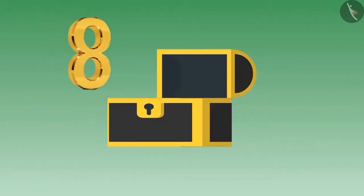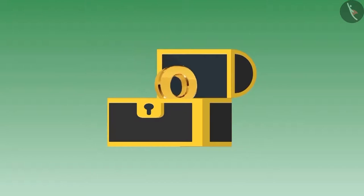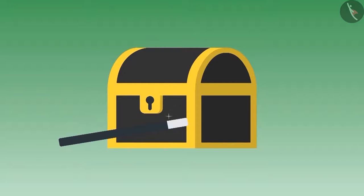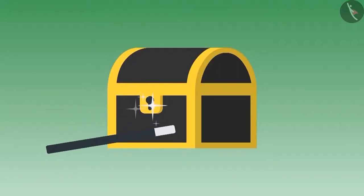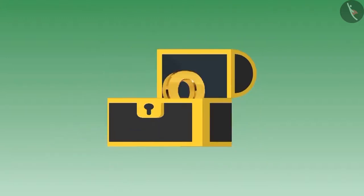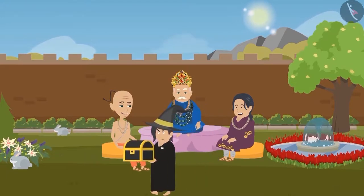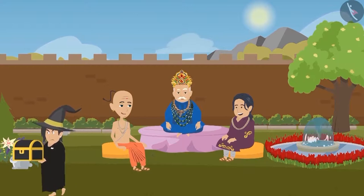Now, Tenali Raman placed the number 8 made of iron in the box upright. The magician recited the magical words and performed the magic. The moment the magician opened the box, he saw that the object was still upright. Once again, the magician recited the magical words but could not succeed. Finally, he gave up, apologized to the king and left. The king was very happy.